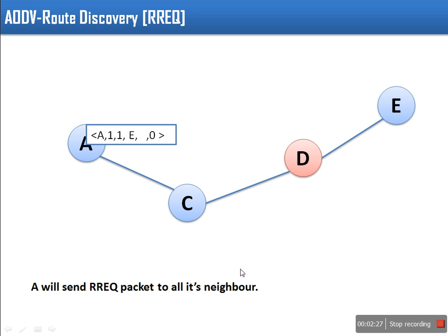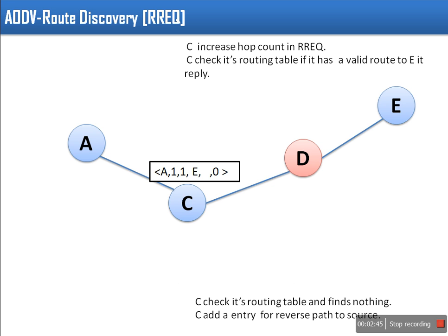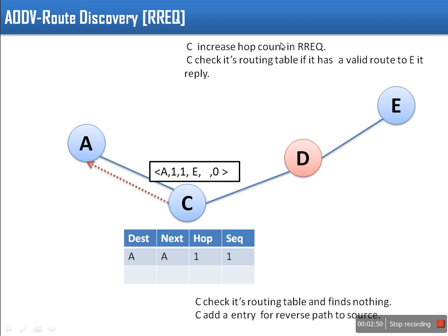A will broadcast this request packet to its neighbors. In our example there is only one neighbor, C. In case there are multiple neighbors, every neighbor receives the request. After receiving this packet, intermediate nodes will create an entry in the routing table — they will know that this packet is coming from source A and came on this link, so in order to send any packet to A, forward it in this direction. So they set up a reverse path.